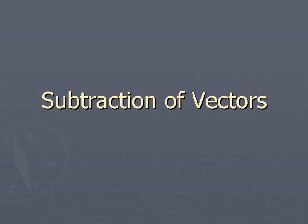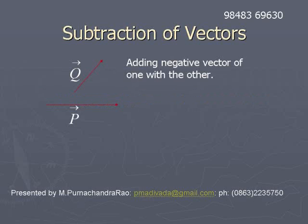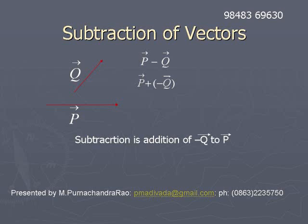Subtraction of vectors is nothing but adding the negative of one vector to another vector. Suppose if you want p̄ minus q̄, that means if you want to subtract q̄ from p̄, it is written as p̄ minus q̄.